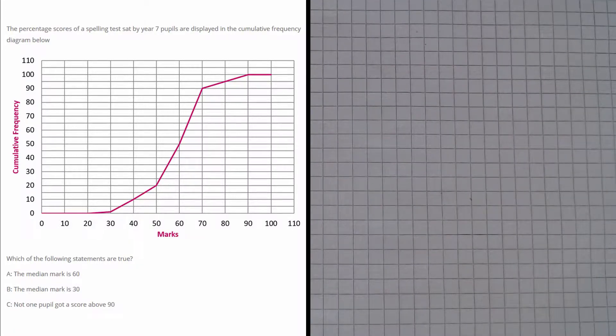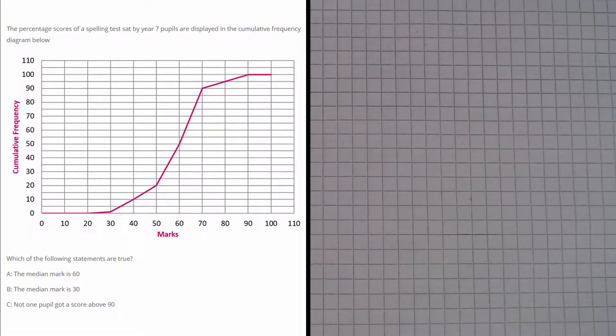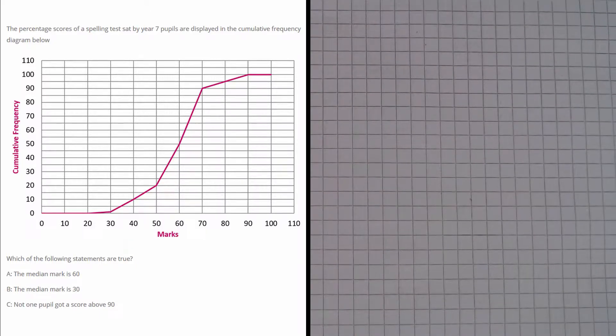Now in this question we are given a cumulative frequency diagram that represents the percentage scores of a spelling test sat by year 7 pupils. And the question asks us which of the following statements are true.